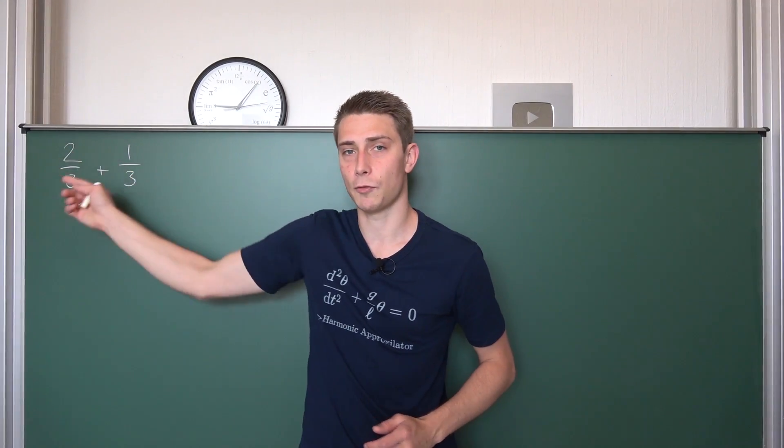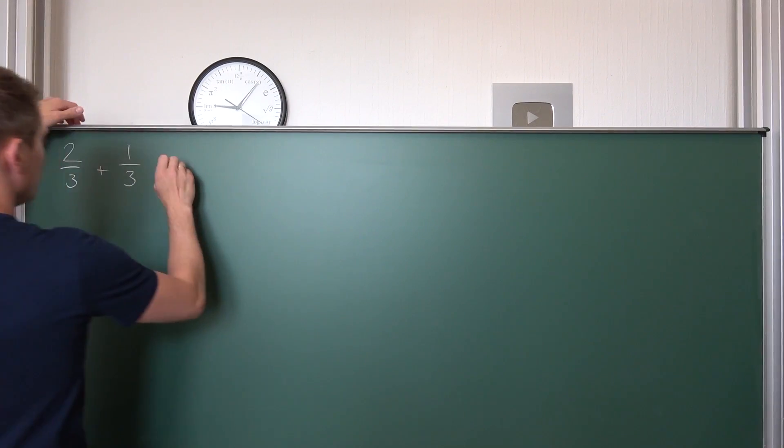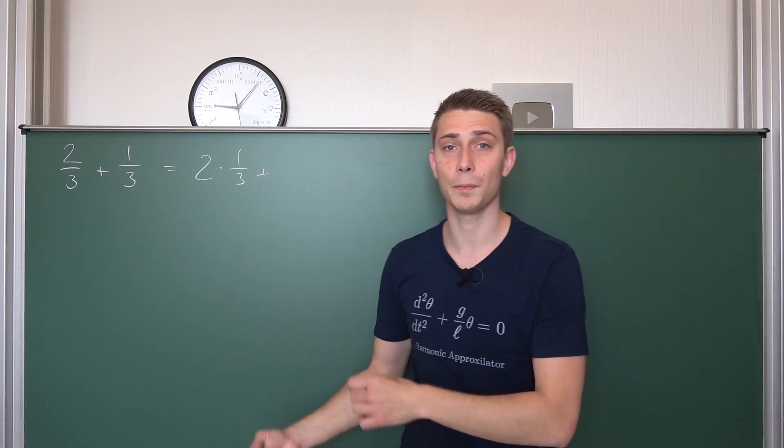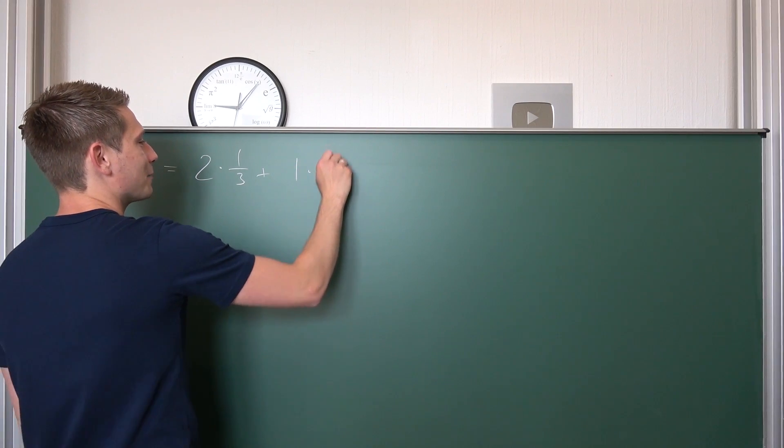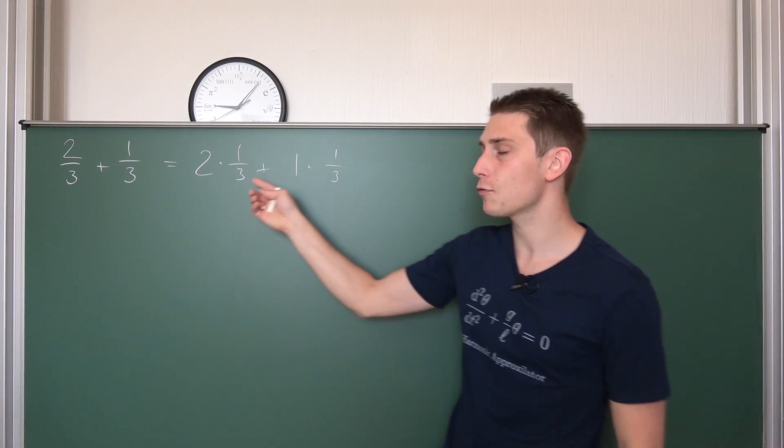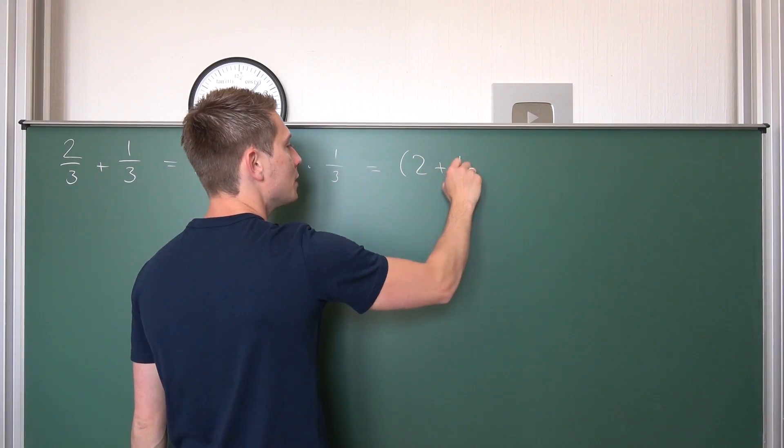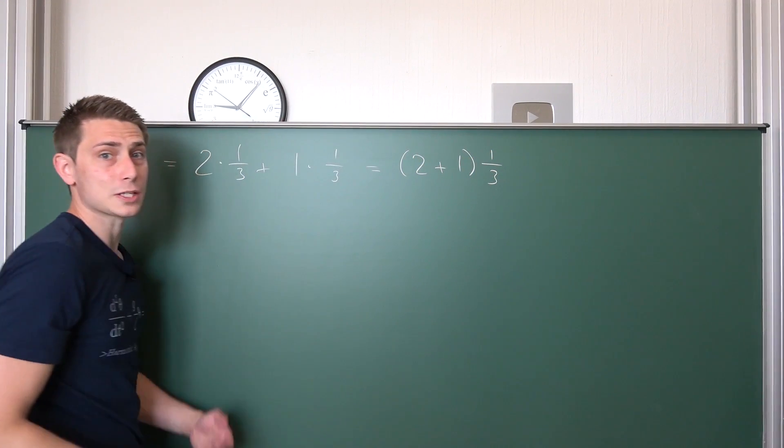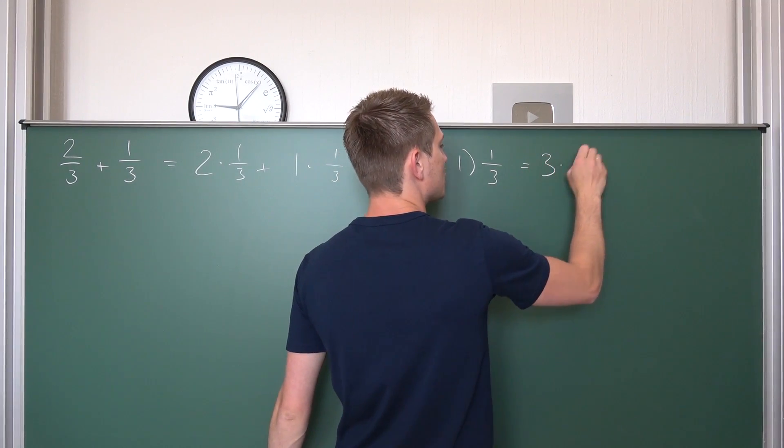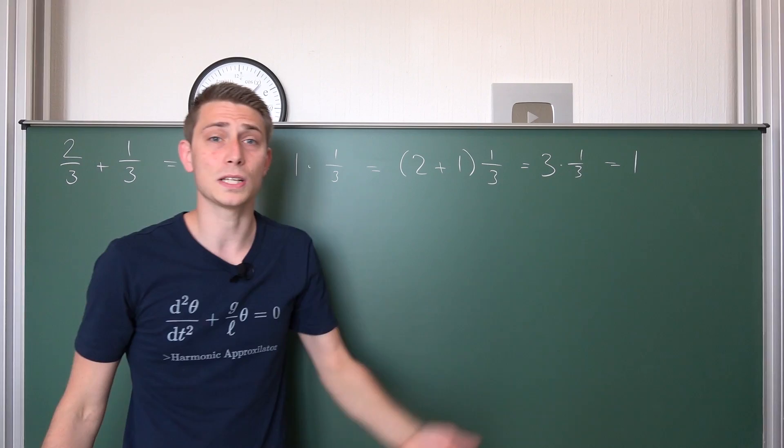But why is it one? We are going to rewrite the fractions at first. You know each and every fraction a over b can be written as a times one over b. Meaning two over three is nothing but two times one third, plus one third is nothing but one times one third. And now by the distributivity laws, we know that one third is a common factor and we can actually factor it out, meaning we are going to bring the one third to the outside, leaving us with two plus one times one third. Well, two plus one is obviously just three. This gives us three times one third. Three times one third is just three out of three pieces makes one, and well obviously this holds.